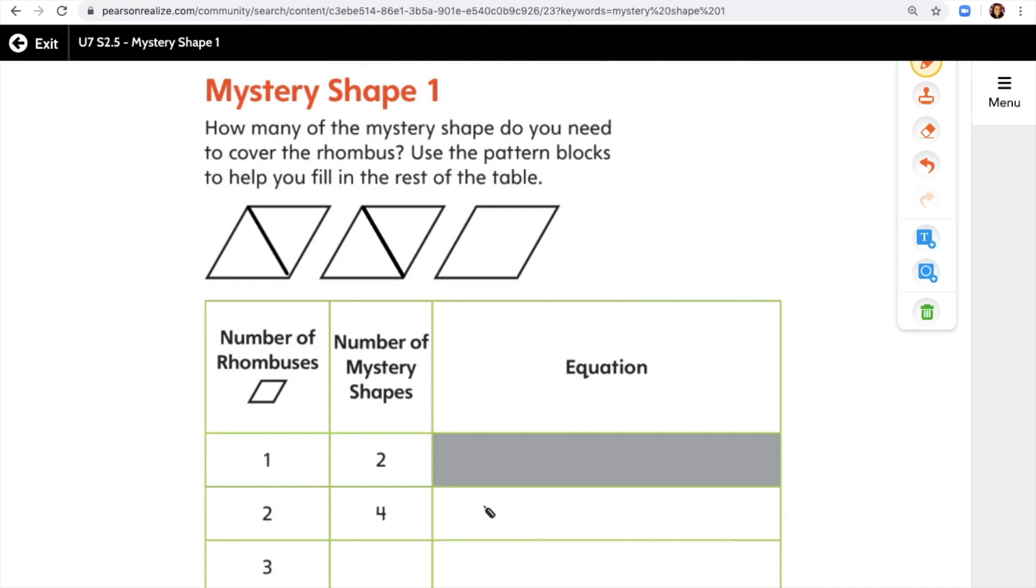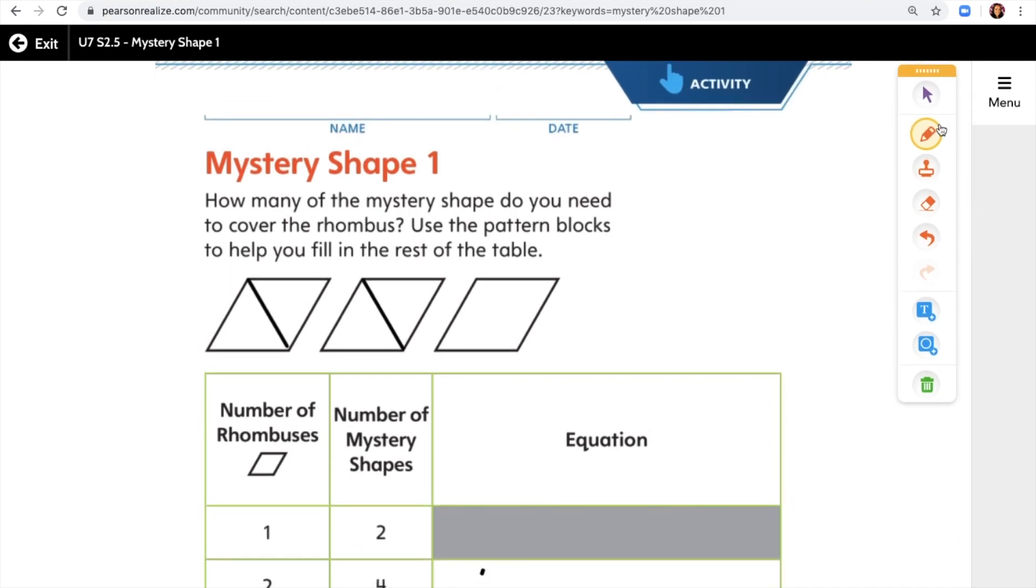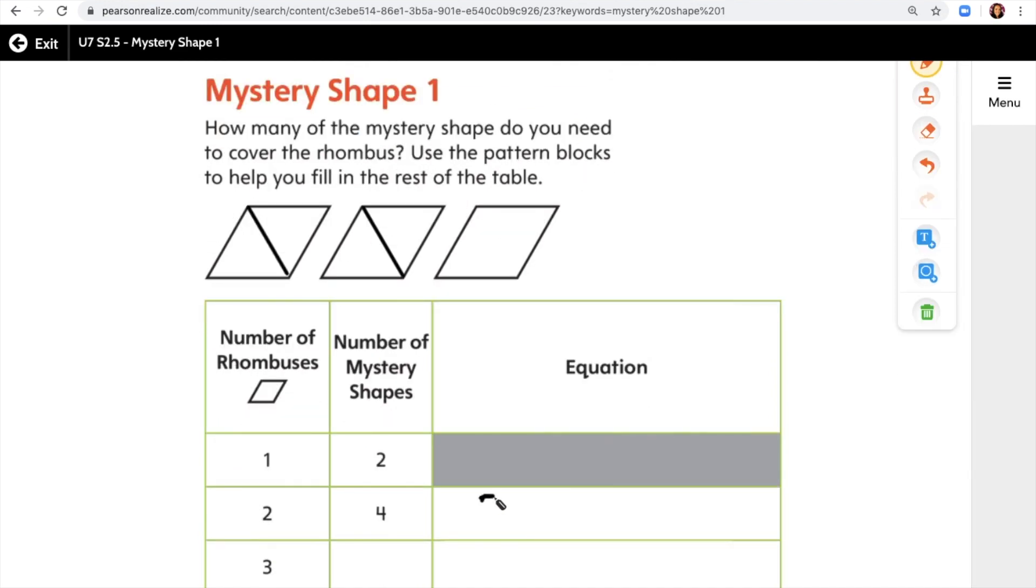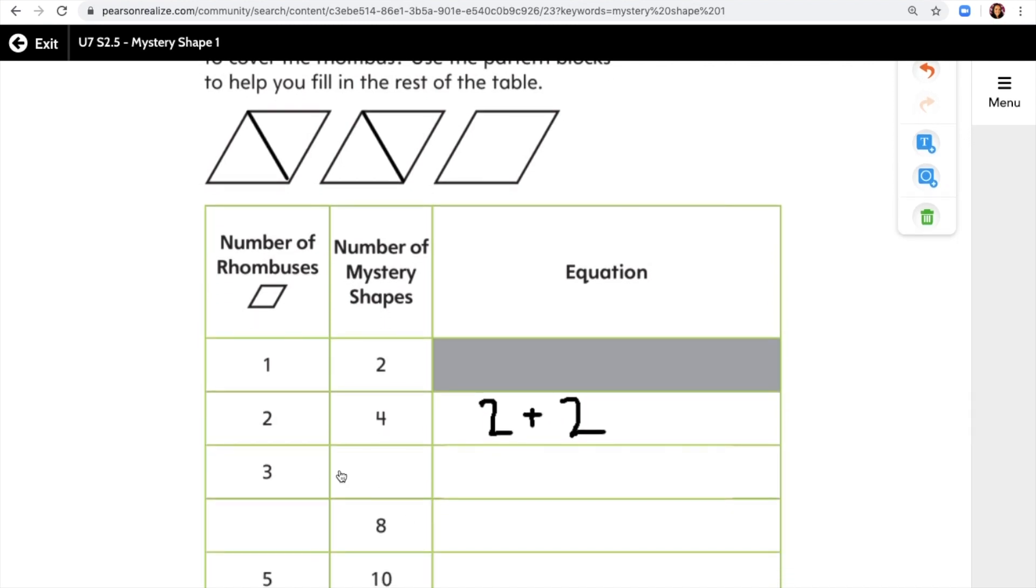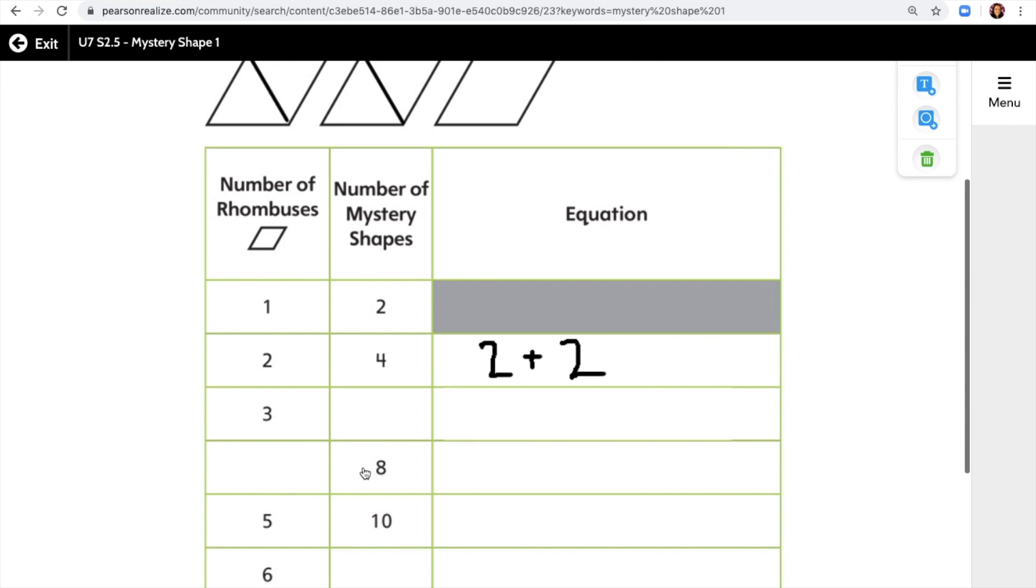So our equation would be two plus two. Now if we have three rhombuses, how many mystery shapes will we need? And do you see a pattern here? It looks like two, four, eight, ten. Do you see a pattern here?